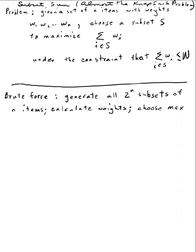The subset sum problem is almost the same as the knapsack problem, a classic computer science problem. The problem is given a set of N items, each item has a weight. Here are my weights, W1, W2 up to Wn. Choose a subset of those items that will maximize the sum of their weights under the constraint that that sum of the weights is less than or equal to an upper bound.